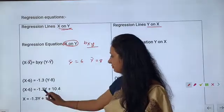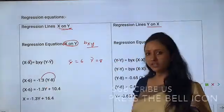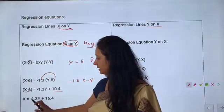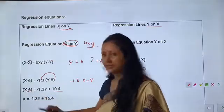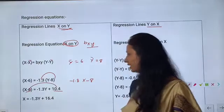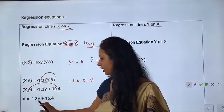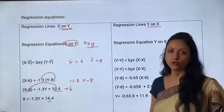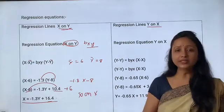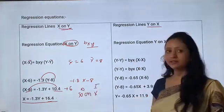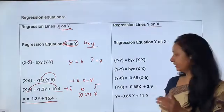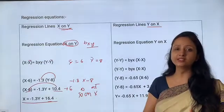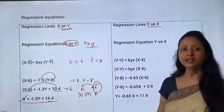Substituting x̄=6, ȳ=8, and bxy=−1.3: x − 6 = −1.3(y − 8), which gives x = −1.3y + 10.4 + 6 = −1.3y + 16.4. This is our x on y regression equation, where x is the dependent variable and y is the independent variable, studying how changes in y affect x.